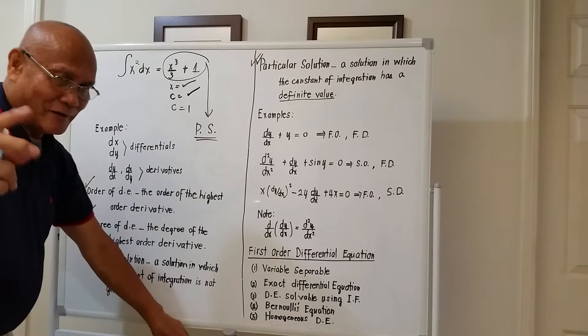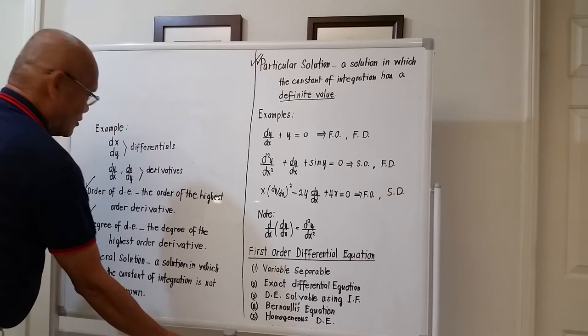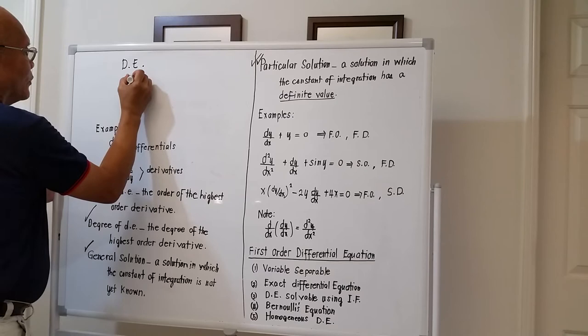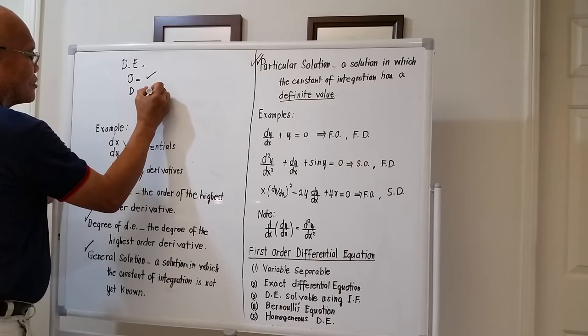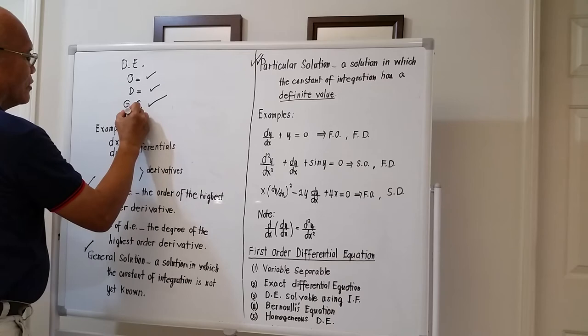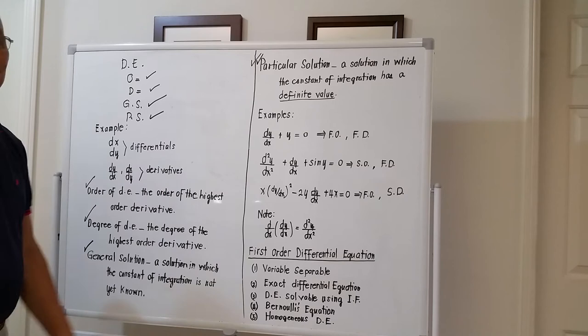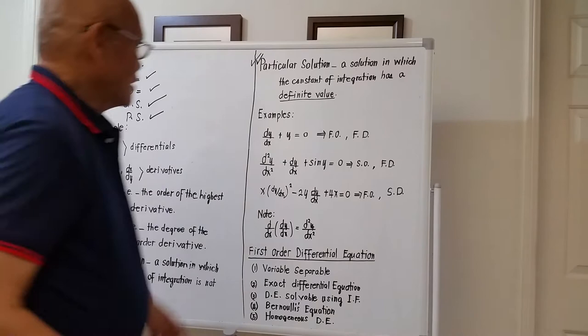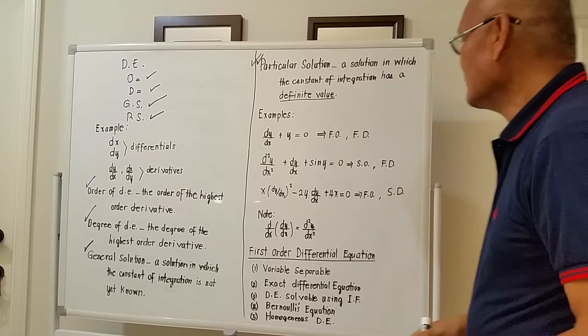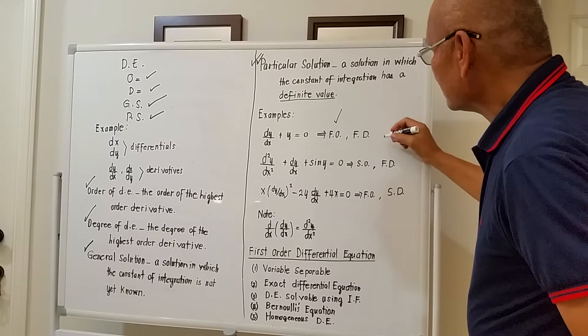Differential equation is easy. We now know the meaning of a differential equation, the significance of order, the significance of degree, what is a general solution, and what is a particular solution. I will give you an example. Example number one: dy/dx + y = 0. The order is first order and the degree is first degree.